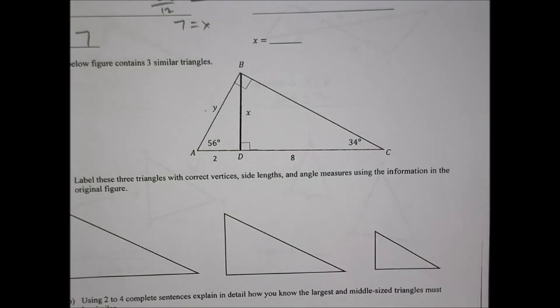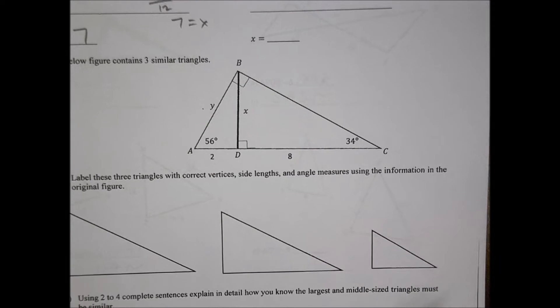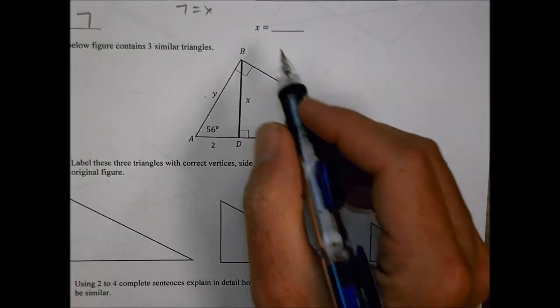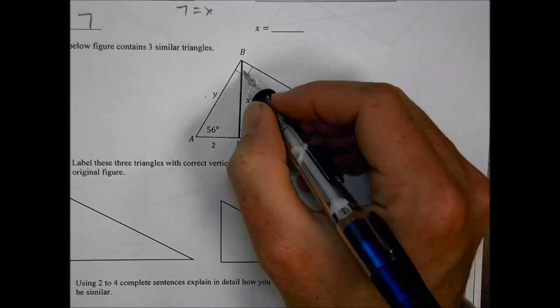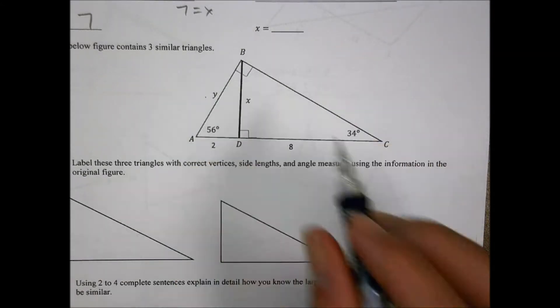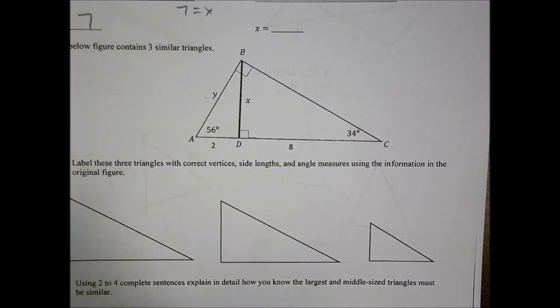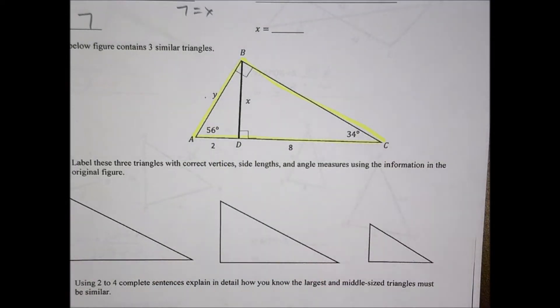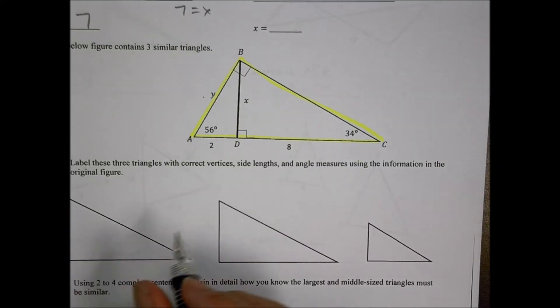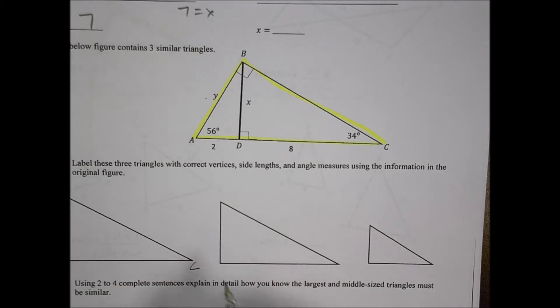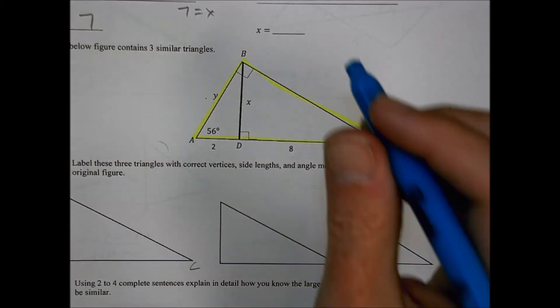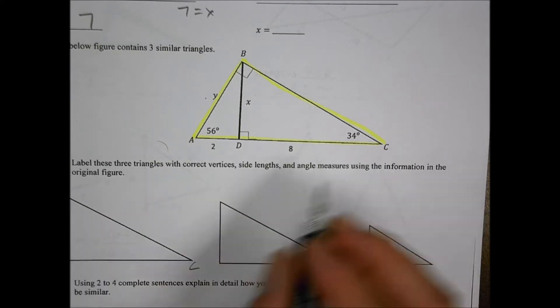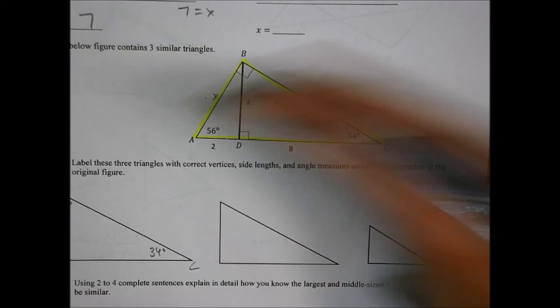Number 15, our last one here. The figure below contains three similar triangles. Label these three triangles with the correct vertices, side lengths, and angle measures. So our three triangles: we have the large one here, then we have a medium size one, and then we have a small one right there. I have the large one. We can label that, you can see our right angle measurement is at B. Our short leg goes B to A, and our long one comes out here to C. That's our A, B, C. I should put the labels that I have, but what I also know is that A is at 56 degrees, C is 34 degrees, and that's my right angle.